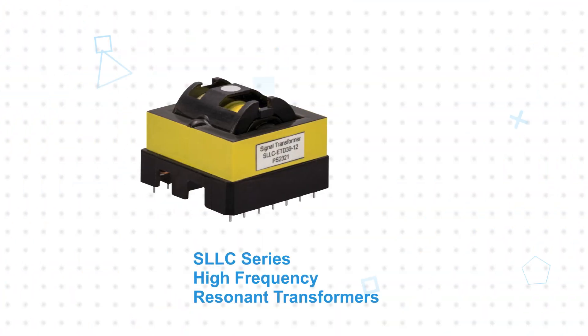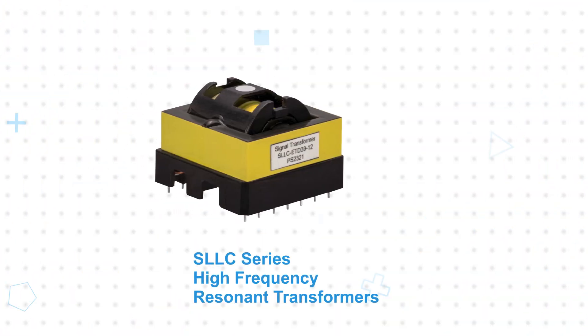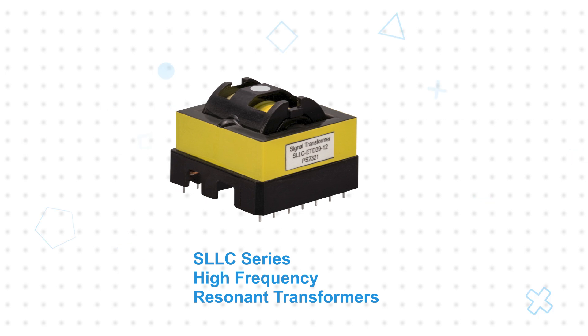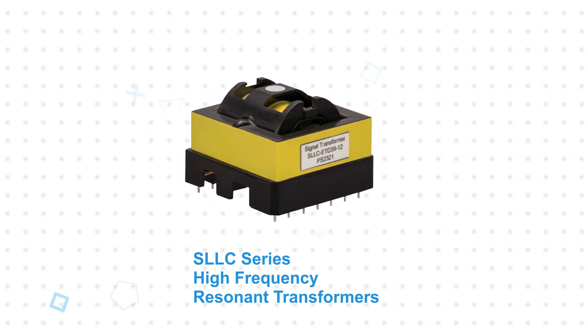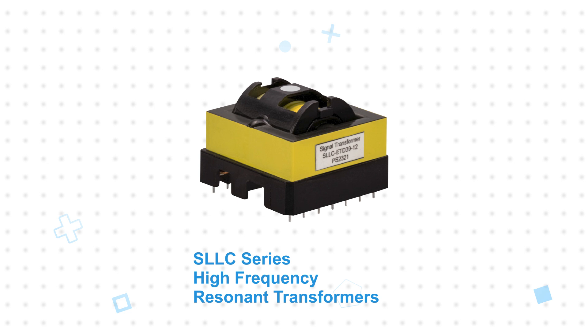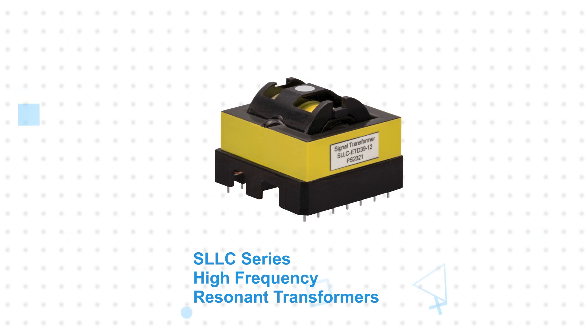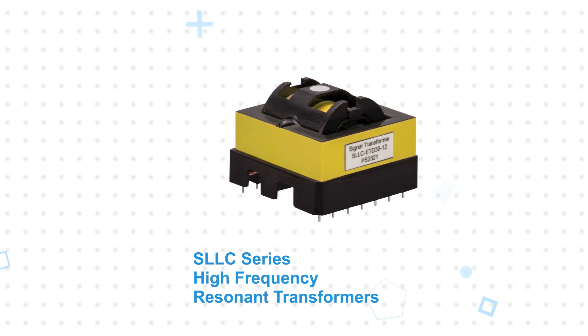The S-LLC Series are horizontal PCB through-hole mount transformers in ETD34, ETD39, and ETD44 platforms, all with a low profile to minimize the size and volume of the power converter while still offering 4kV isolation.